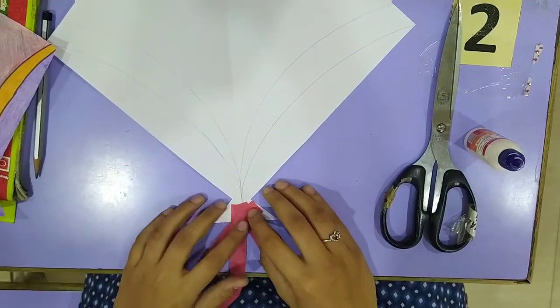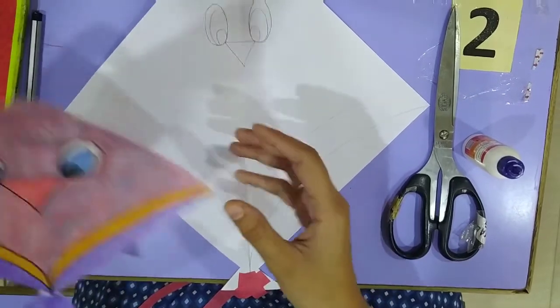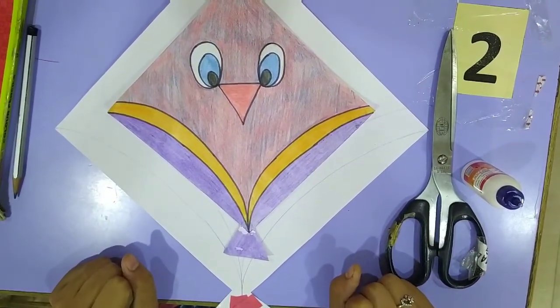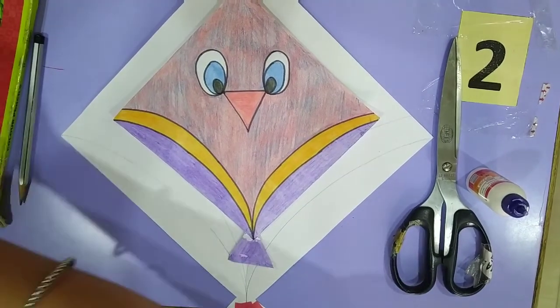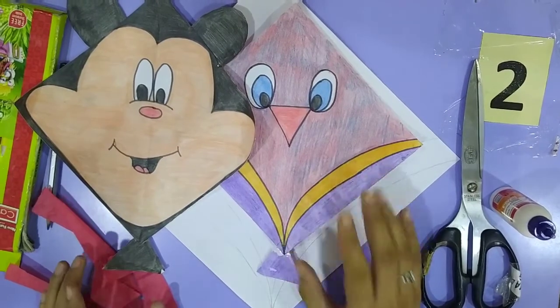So our kite is ready. You need to color the kite. I will show you this sample. And you can make Mickey Mouse also. Thank you. Thank you.